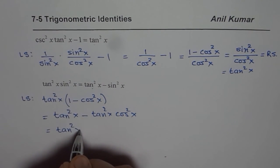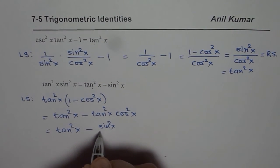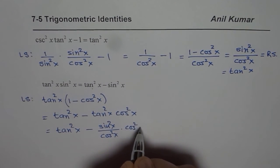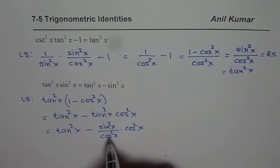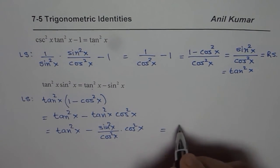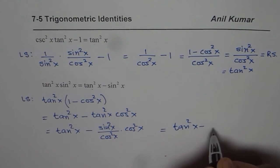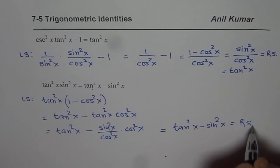You get tan square x minus sin square x over cos square x times cos square x. Now cos square x cos square x cancel out and what you get is tan square x minus sin square x which is indeed right side. Correct?